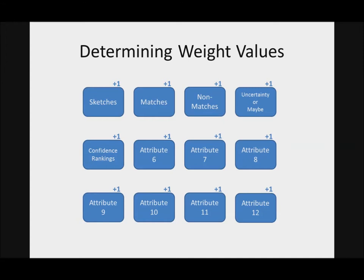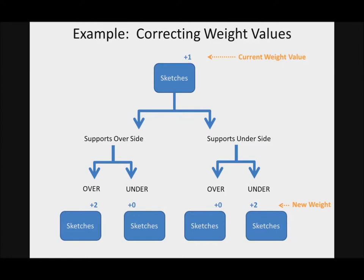So we need to figure out what are the weight values for all these different attributes. What you see here is basically 12 different attributes. For example, sketches, matches, non-matches, uncertainty, or maybe those perceptions that you're not really sure how to grade, and the confidence ranking. But there's 12 different attributes that I was able to recognize. And attributes 6, 7, 8, 9, 10, 11, 12, those attributes are specific only to the program. But I'm not going to get into that. It's kind of complicated. But in the very beginning, we don't know what the weight values are. So what I did was I basically set all of them to plus 1.